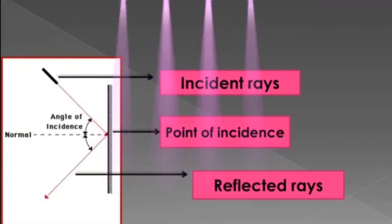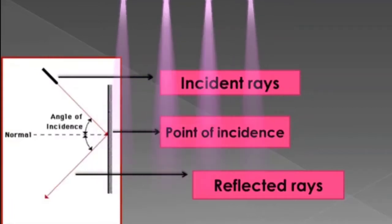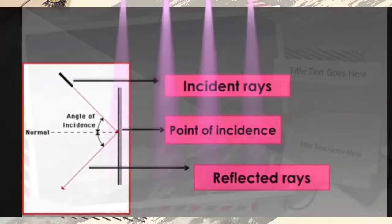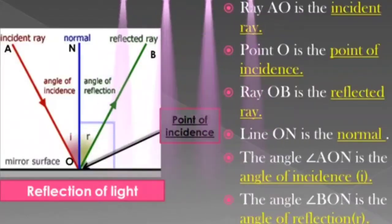Let us learn some definitions before learning about these laws. Let us see the figure. There are mainly three components: the middle ray is the normal, the first is the incident ray, and the third one is the reflected ray, along with the angle of reflection.